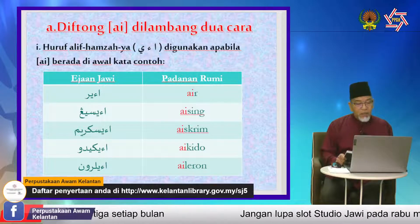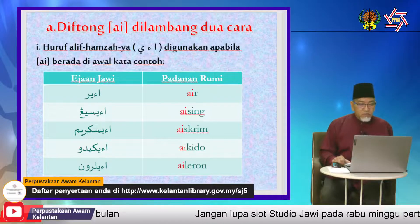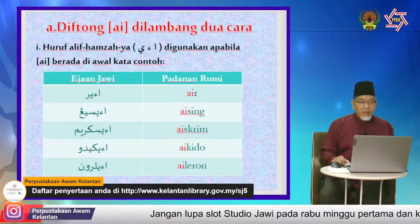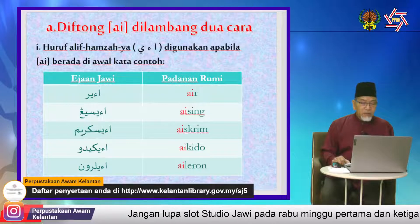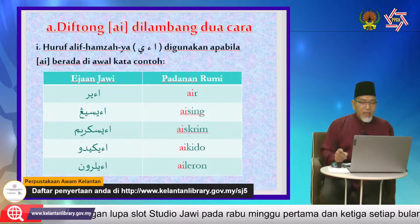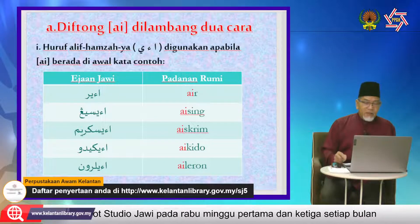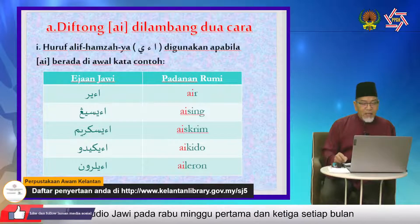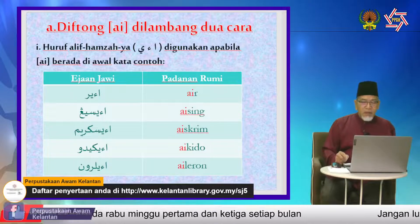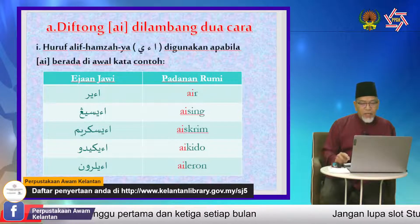Sebagai contohnya, ejaan Jawi perkataan 'air': ada hamzah — alif, hamzah, ya, ra. Padanan dengan rumi: A-I-R, air. Dalam ejaan lama, 'air' ditulis alif, ya, ra sahaja — tanpa hamzah. Jadi bacanya 'air'. Sebab rumi dahulu pun ejaannya A-Y-R. Contohnya, air lanas.